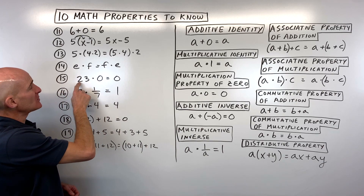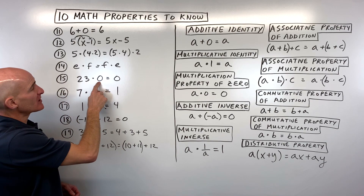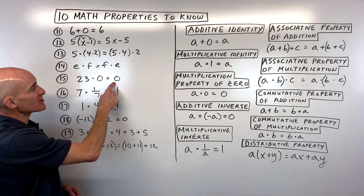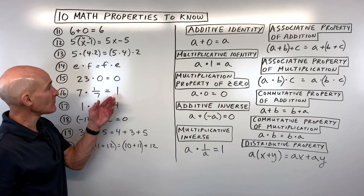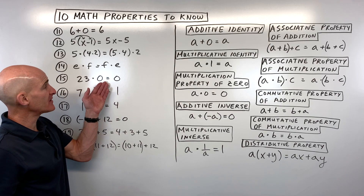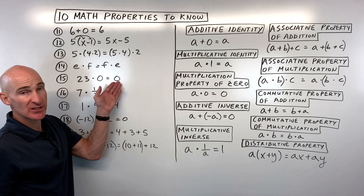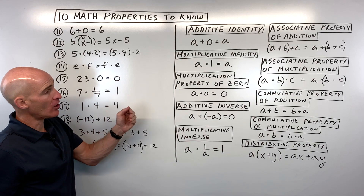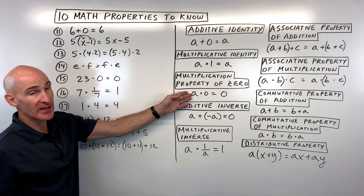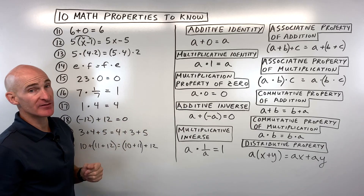Number 15: 23 times zero equals zero. Anything times zero is always zero — that's the multiplication property of zero.